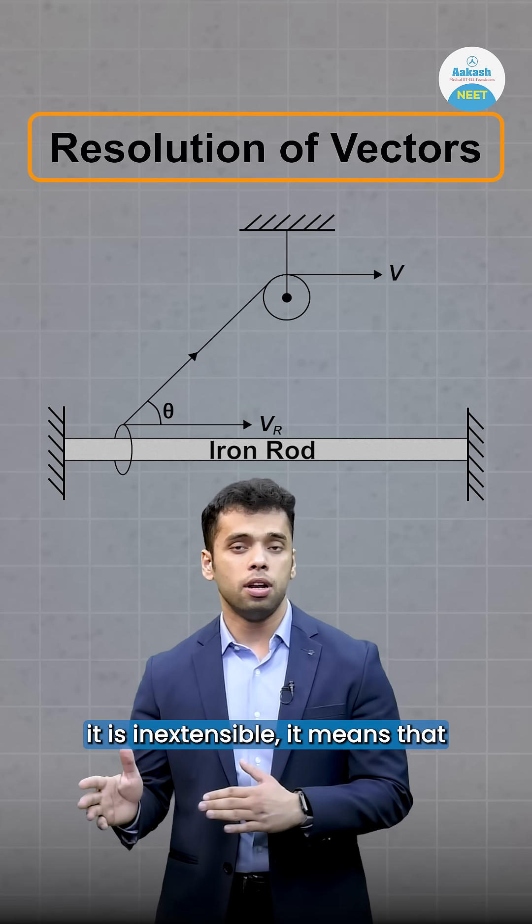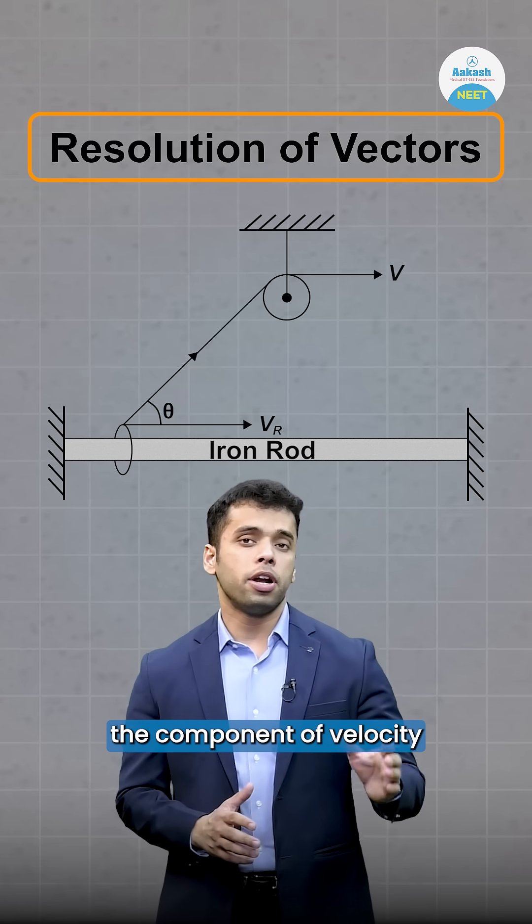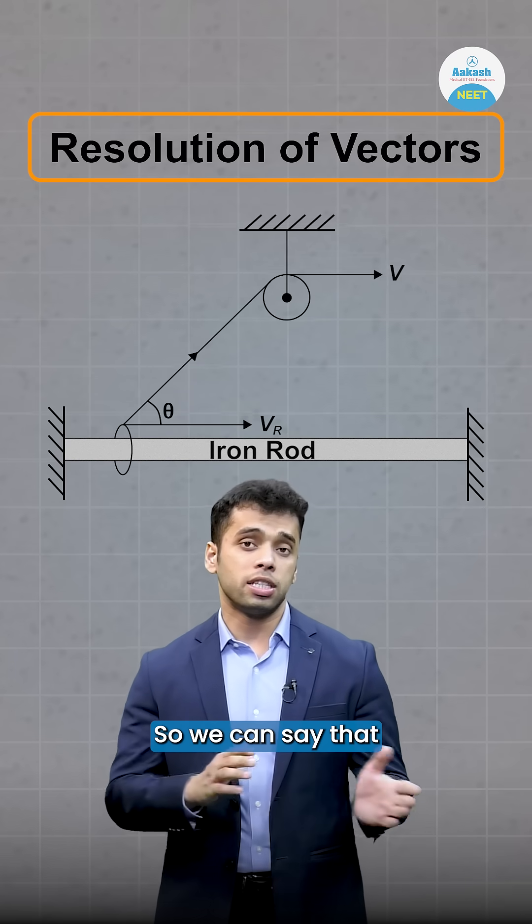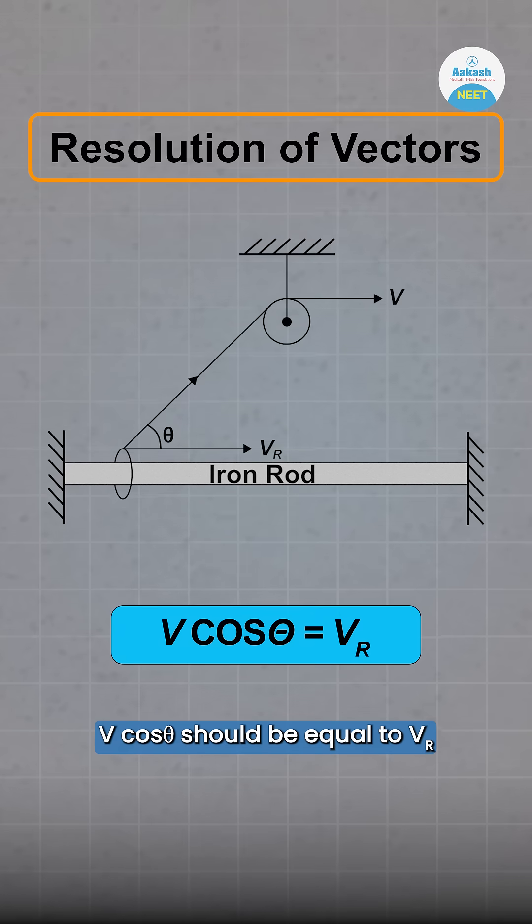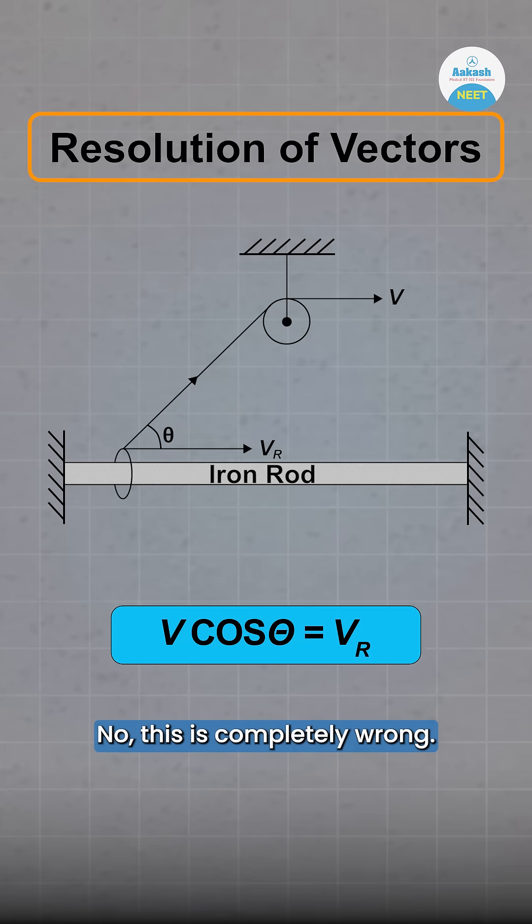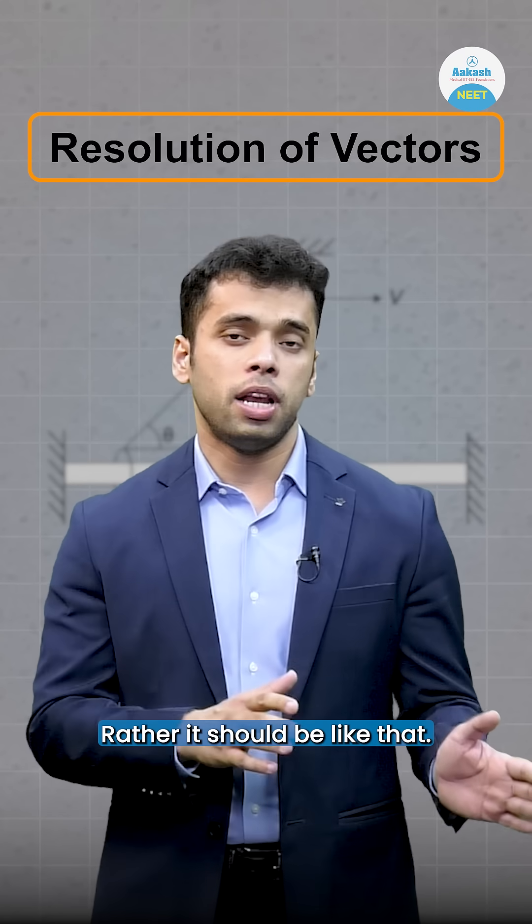It means that the component of velocity along the length of string should be the same. So we can say that v cos θ should be equal to vr, right? No, this is completely wrong. Rather, it should be like that...